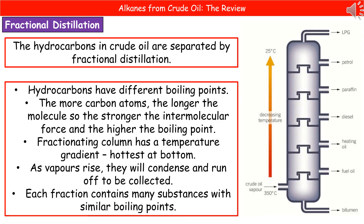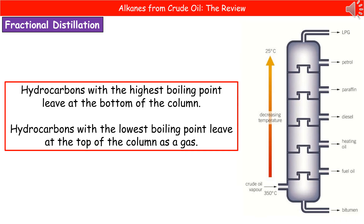You should also know the order in which the fractions come out of the column. LPG is the gas at the very top, then petrol, paraffin, diesel, heating oil, fuel oil, and then bitumen coming off at the bottom. The hydrocarbons with the highest boiling point leave at the bottom of the column, and those with the lowest boiling point leave at the top as a gas.